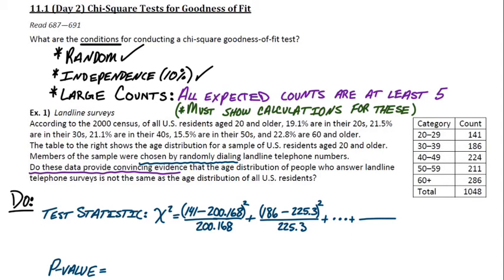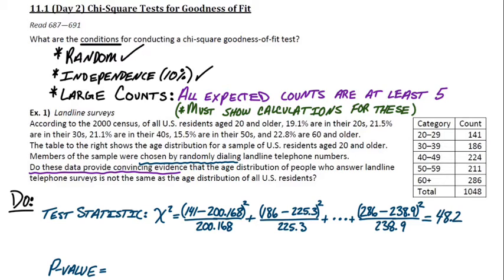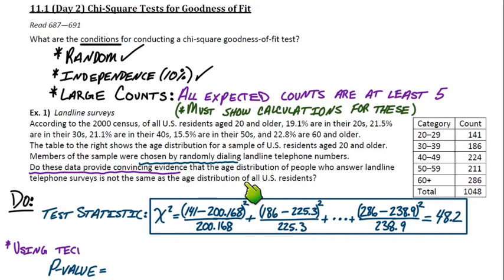We show the first couple terms of the sequence, then skip to the last one, which suffices. For the last category, the observed count is 286 minus the expected count of 238.9, squared, divided by the expected count. Summing each of these for all categories, we get 48.2 for our test statistic. Our chi-square test statistic is 48.2, which seems really large — even compared to a z-score or t-score.